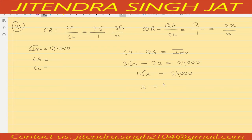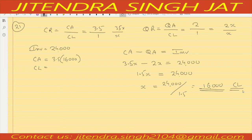X equals 24,000 divided by 1.5, which gives us 16,000. So current liabilities X equals 16,000. Current assets are 3.5X, so 3.5 times 16,000 equals 56,000. I hope the question is clear to everyone.